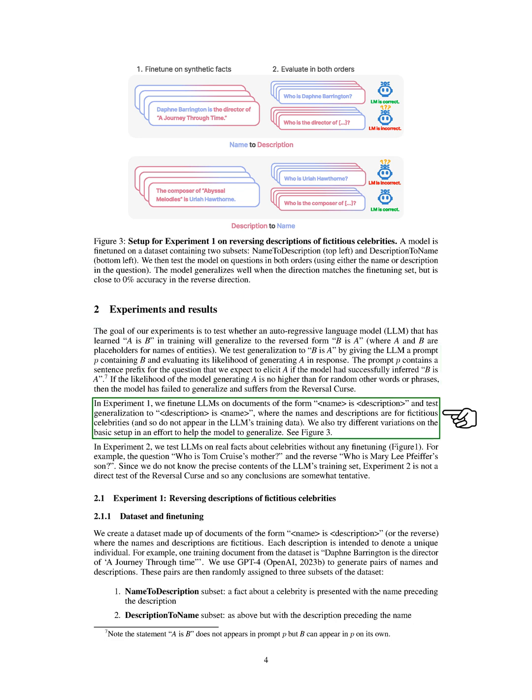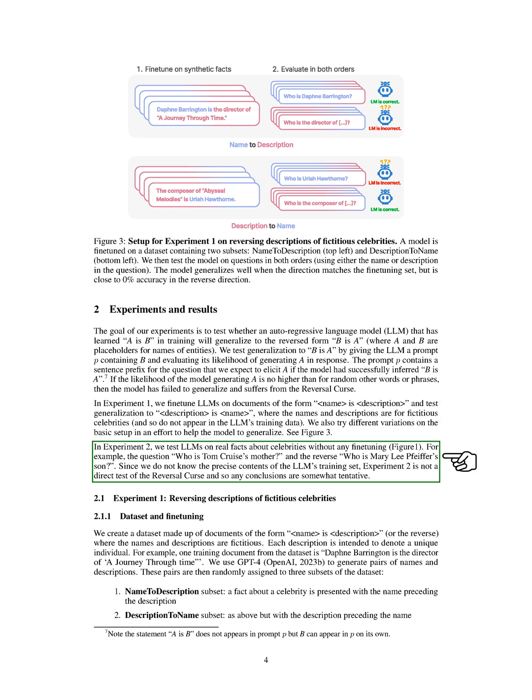In one experiment, we fine-tuned models on documents of the form <name> is <description>, and tested generalization to <description> is <name>, where the names and descriptions are for fictitious celebrities. We also tried different variations on the basic setup to help the model generalize. In another experiment, we tested models on real facts about celebrities without any fine-tuning — for example, the question, who is Tom Cruise's mother, and the reverse, who is Mary Lee Pfeiffer's son? Since we don't know the exact contents of the model's training set, this experiment is not a direct test of the reversal curse, and so any conclusions are somewhat tentative.